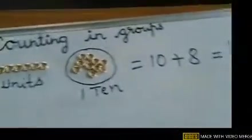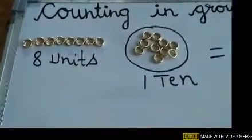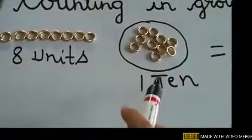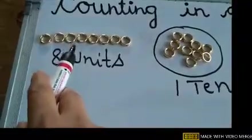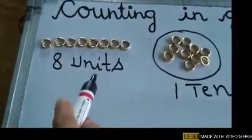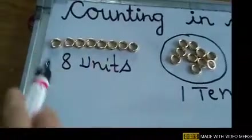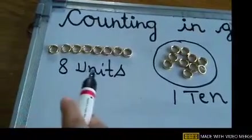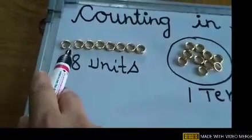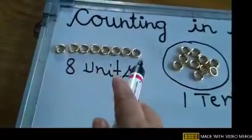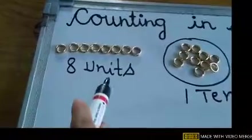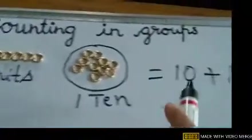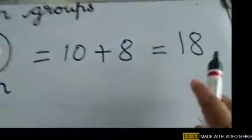So children, I had 18 rings in total. I made a group of 10, so I got 1 ten, and then counted to find the number 18. So 1 ten and 8 units equals 18.